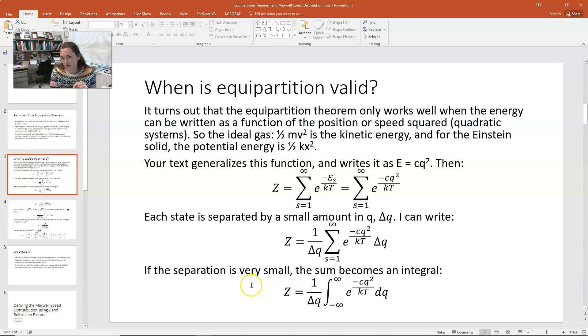Now, if that separation is very small, if the delta q's are tiny, then we could make this summation into an integral. So z would then be 1 over delta q times the integral over all possible states. If we're integrating over q and q is squared, then it doesn't really matter positive or negative. So we're going to sum over all possible values of q from minus infinity to infinity to make it as generic as possible, and then our integral will be e to the negative cq squared over kt times dq.